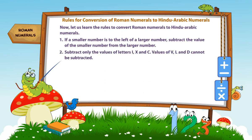Rule number 2. Subtract only the values of letters I, X and C. Values of V, L and D cannot be subtracted.